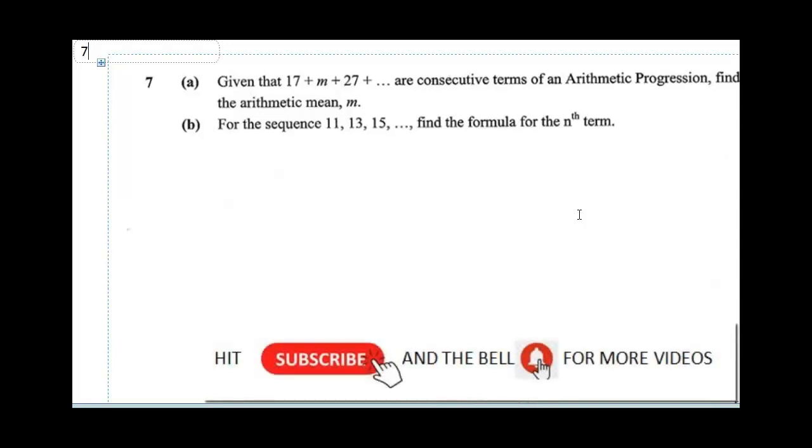Question seven says, given that 17 plus m plus 27 are consecutive terms of an arithmetic progression, find the arithmetic mean. For 17 plus m plus 27, our first term is 17. Our common difference is going to be m minus 17.